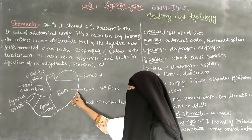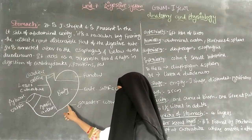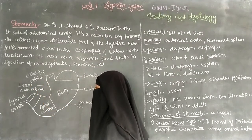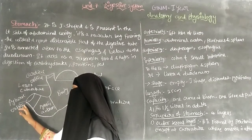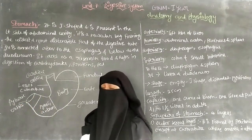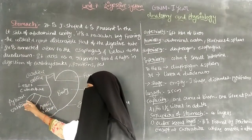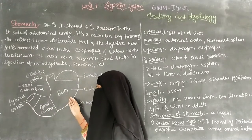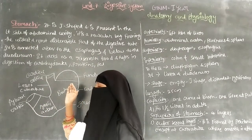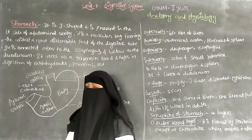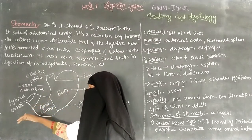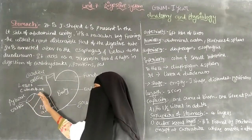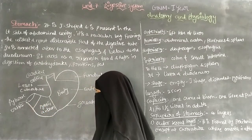There are two curvatures: the greater curvature and the lesser curvature. There is also the pyloric orifice, which is an opening situated at the junction of the stomach and the duodenum. After digestion of food in the stomach, the digested food enters the duodenum through the pyloric orifice.